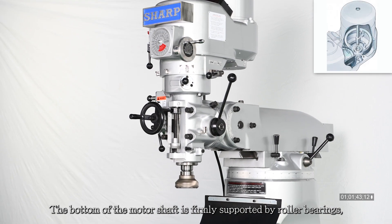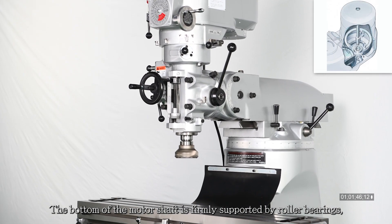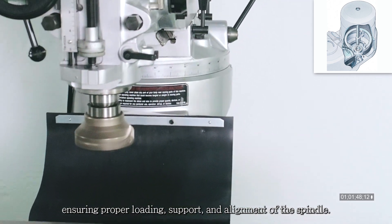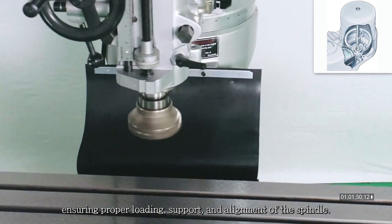The bottom of the motor shaft is firmly supported by roller bearings, ensuring proper loading, support, and alignment of the spindle.